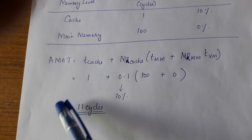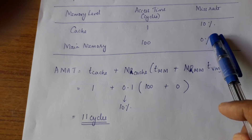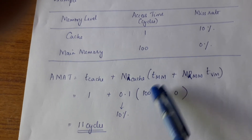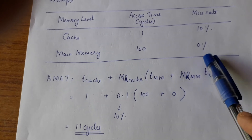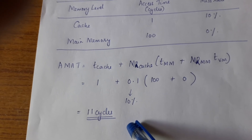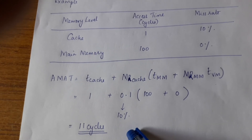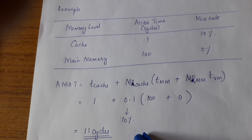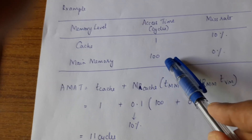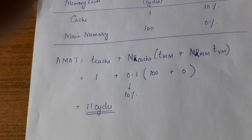Let us calculate AMAT. Substituting the values: AMAT equals T_cache (1 cycle) plus miss rate of the cache (0.1) multiplied by the access time of the main memory (100 clock cycles), plus miss rate of the main memory (0), which gives 11 cycles. This means the processor requests data and on average waits 11 cycles to access memory. If the data is in the cache, it takes 1 cycle; if it comes from the main memory, it takes 100 clock cycles. Given the 10% miss rate, the average memory access time is 11 cycles.